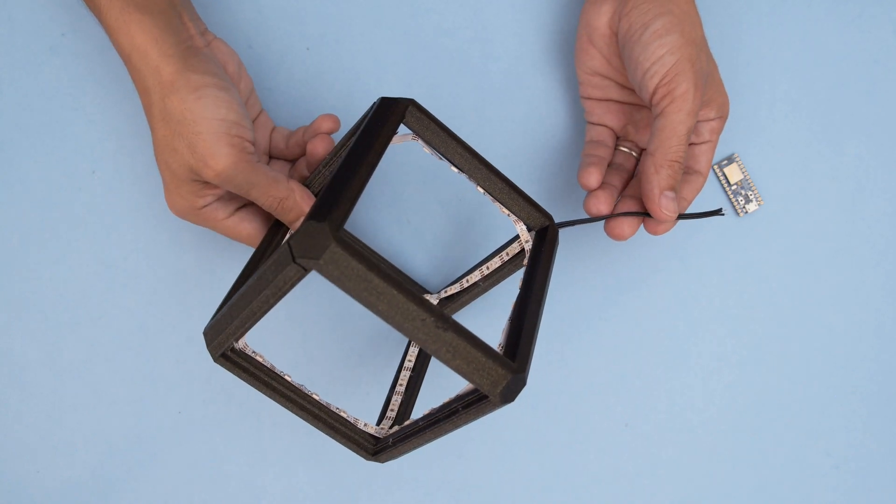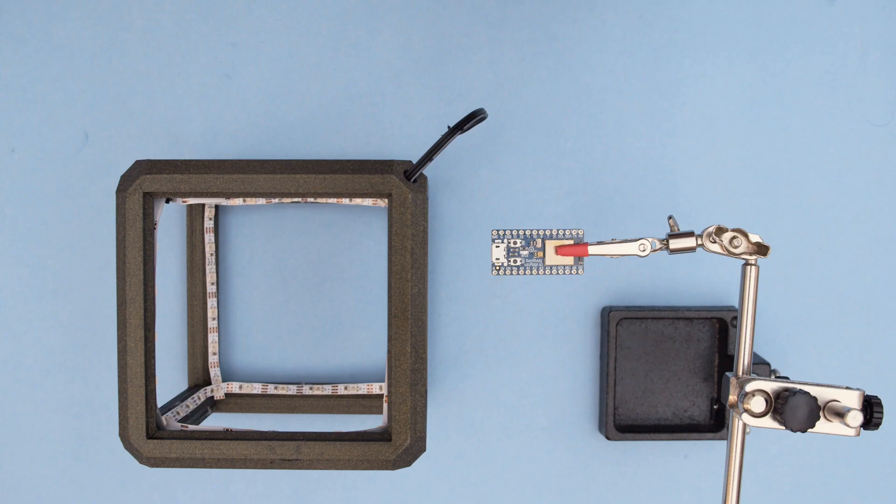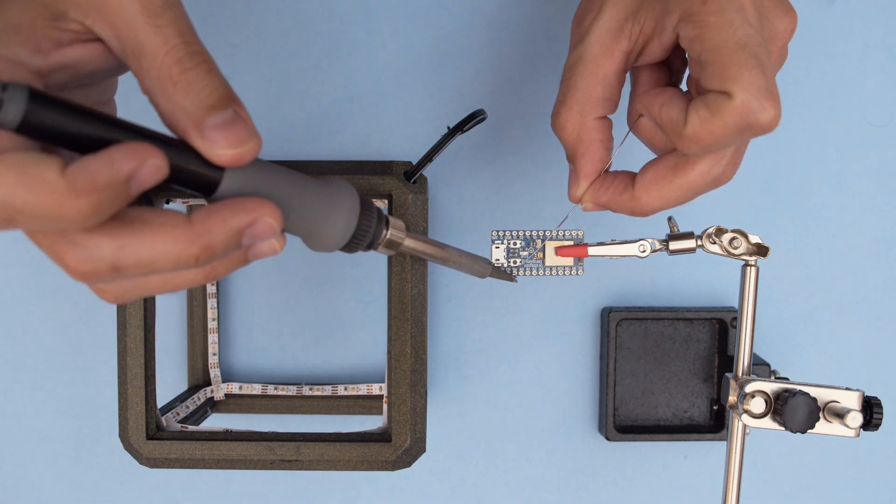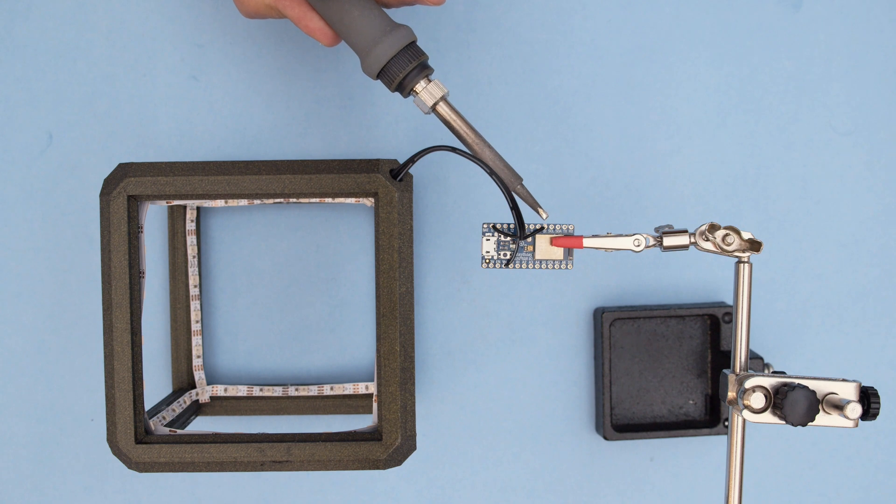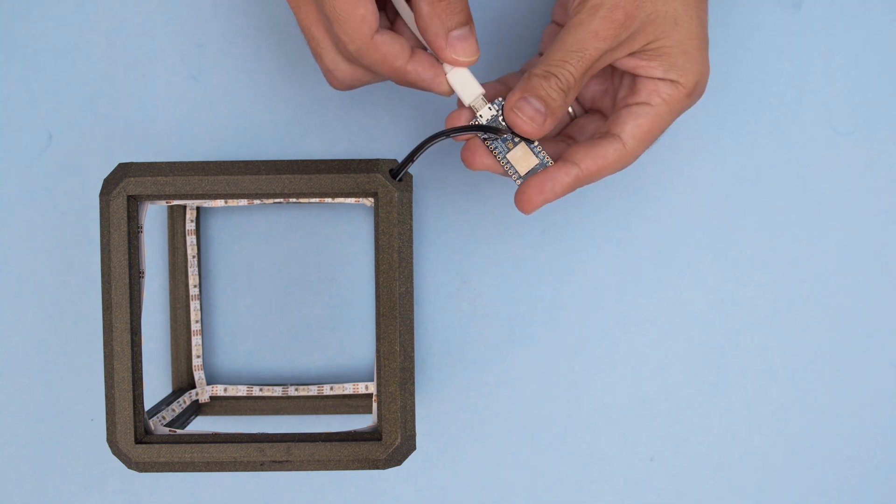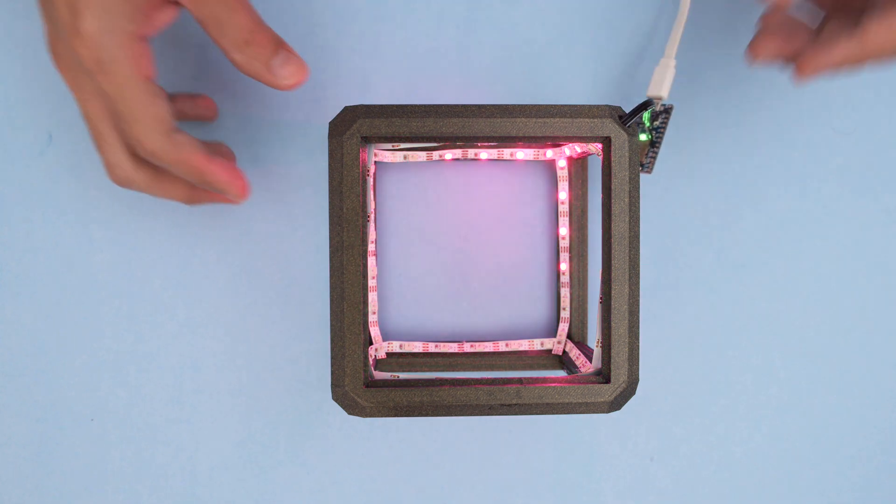Once that's done, we can then wire up the strip to the itsy bitsy board. You'll want to test out the LED strip before attaching the acrylic panels. So thoroughly inspect the wiring and make sure there aren't any shorts.